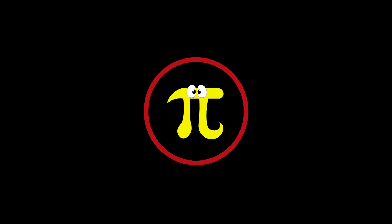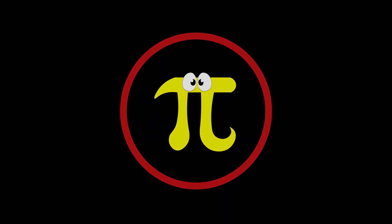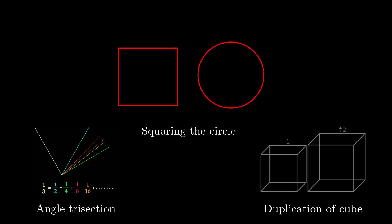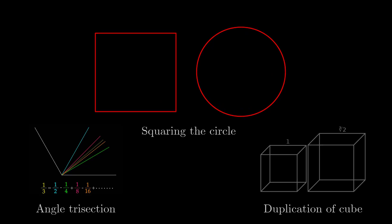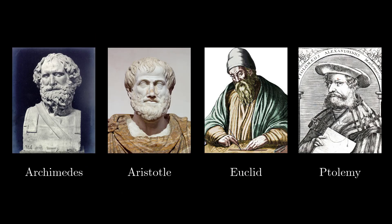In the last video, we saw how pi pops up whenever there are circles to be measured. We also looked at some problems that included pi and how Greeks dealt with the problem of finding the exact value of pi. Let's continue our story from where we left last time.